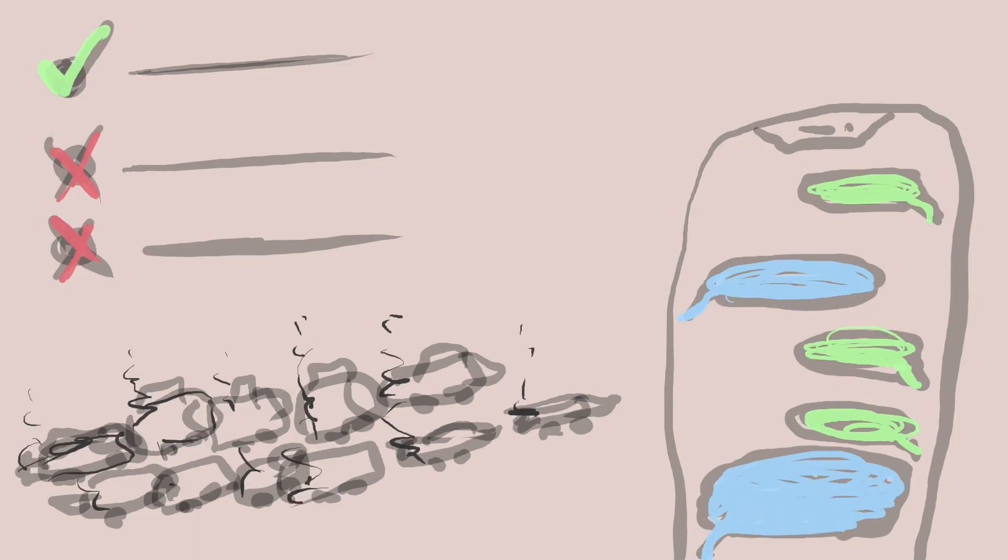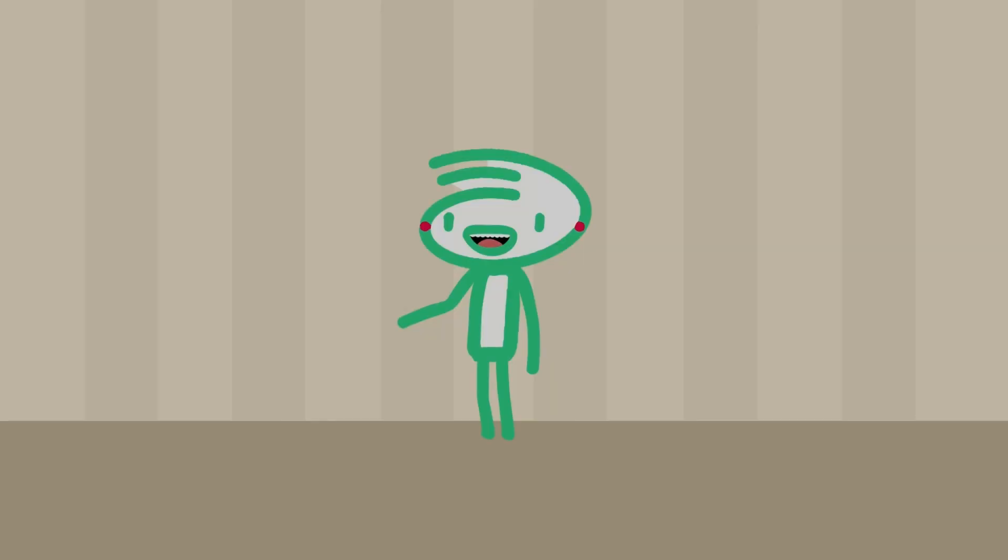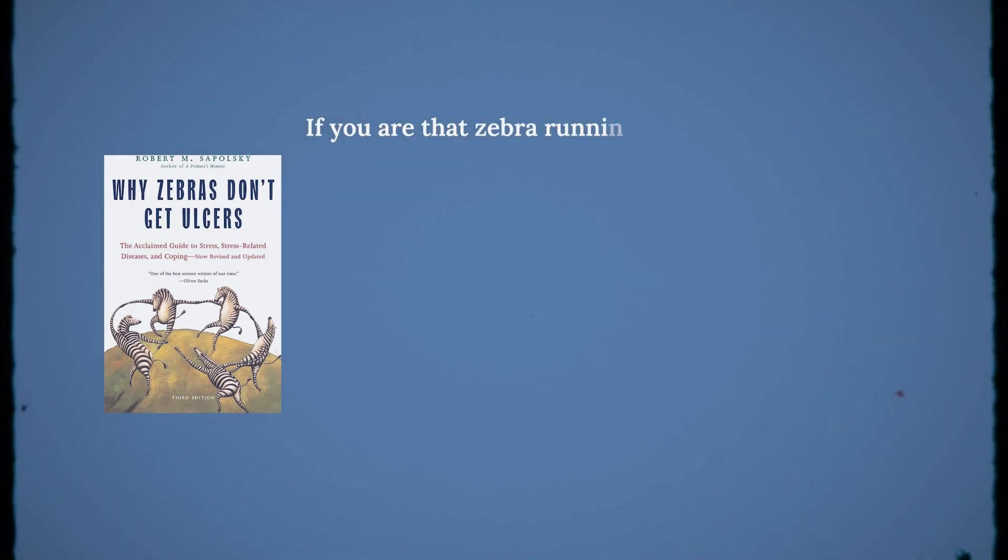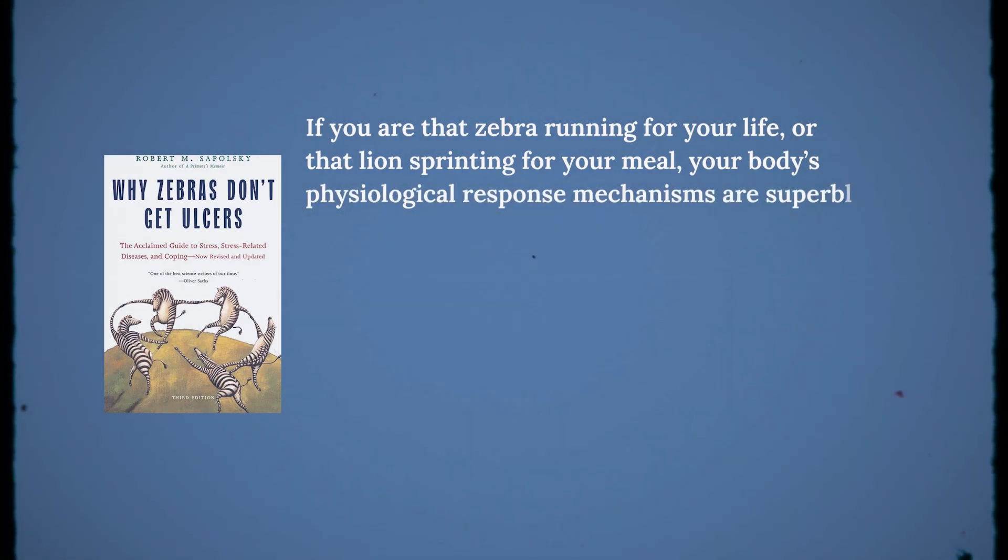In his book, Why Zebras Don't Get Ulcers, American neuroendocrinology researcher Robert Sapolsky writes, if you are that zebra running for your life, or that lion sprinting for your meal, your body's physiological response mechanisms are superbly adapted for dealing with such short-term physical emergencies.